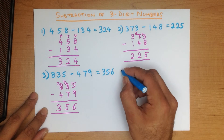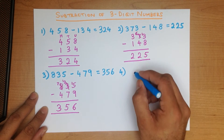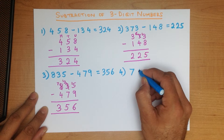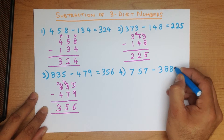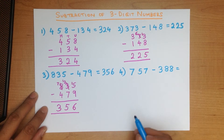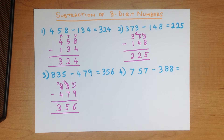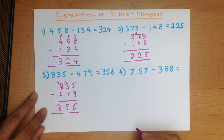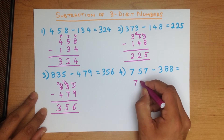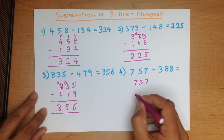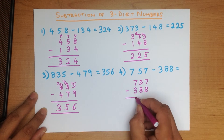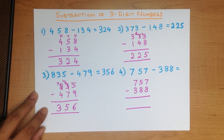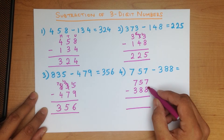Let's try one final example. What is 757 minus 388? First step — let's write these down in the vertical format: 757 minus 388. Now the first step, we subtract the column on the right-hand side.